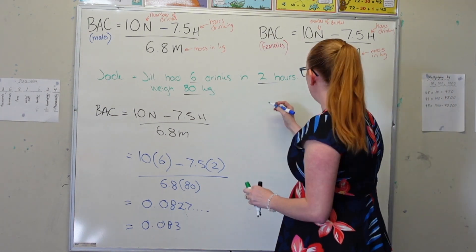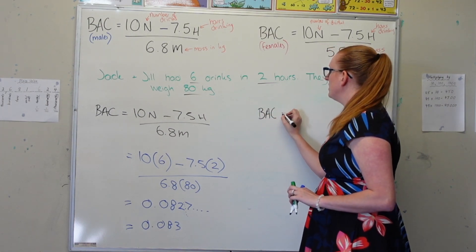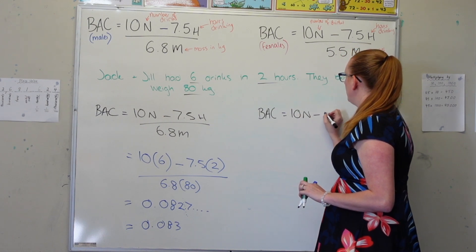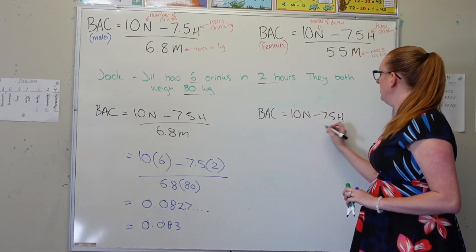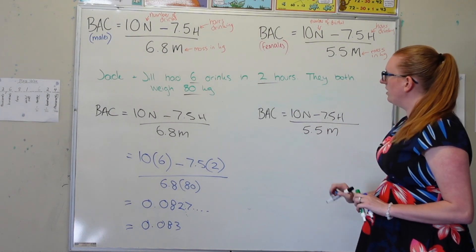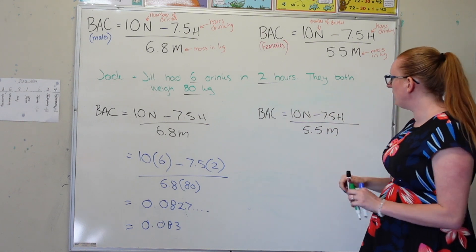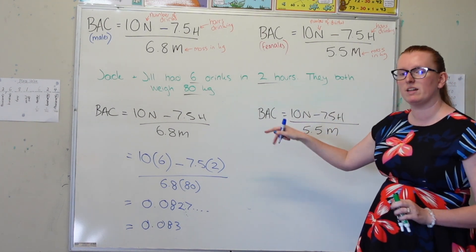Again, I'm going to start by rewriting my formula. So BAC for females is 10N minus 7.5H divided by 5.5M. Just like Jack, she had six drinks in two hours and weighs 80 kilos. So I'm going to sub those values in.